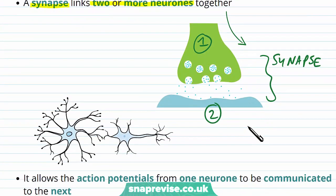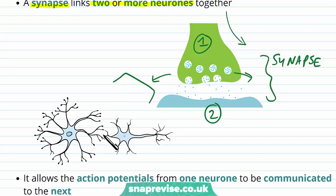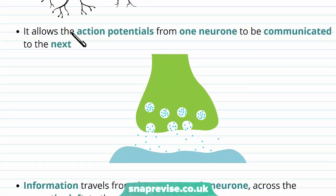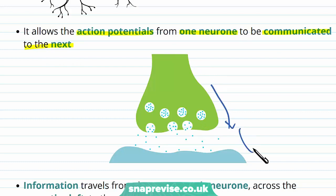It can also link more than two neurons together, so it can have several neurons receiving information from the same neuron. There would be a gap between the end of one cell and the start of the next cell. The purpose of the synapse is to allow the action potential which is propagating along to travel from one neuron to the next, communicated across this gap.